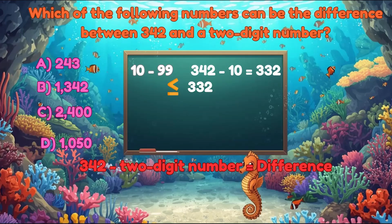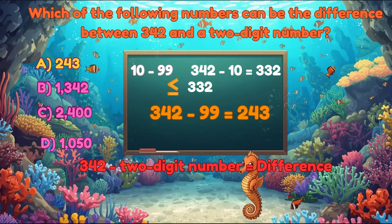Looking at our options: A. 243, this is possible. 342 minus 99 equals 243. Now B. 1,342, too big. C. 2,400, too big. D. 1,050, too big again. So the answer is A, 243.